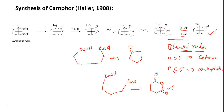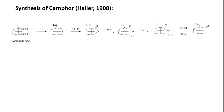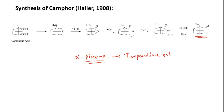This is the way how camphor's structure was elucidated and confirmed via synthesis. Currently, camphor is produced commercially via synthesis from alpha-pinene, which is obtained from turpentine oil. It is a lengthy procedure involving carbocation-mediated rearrangements through several steps, ultimately yielding camphor.